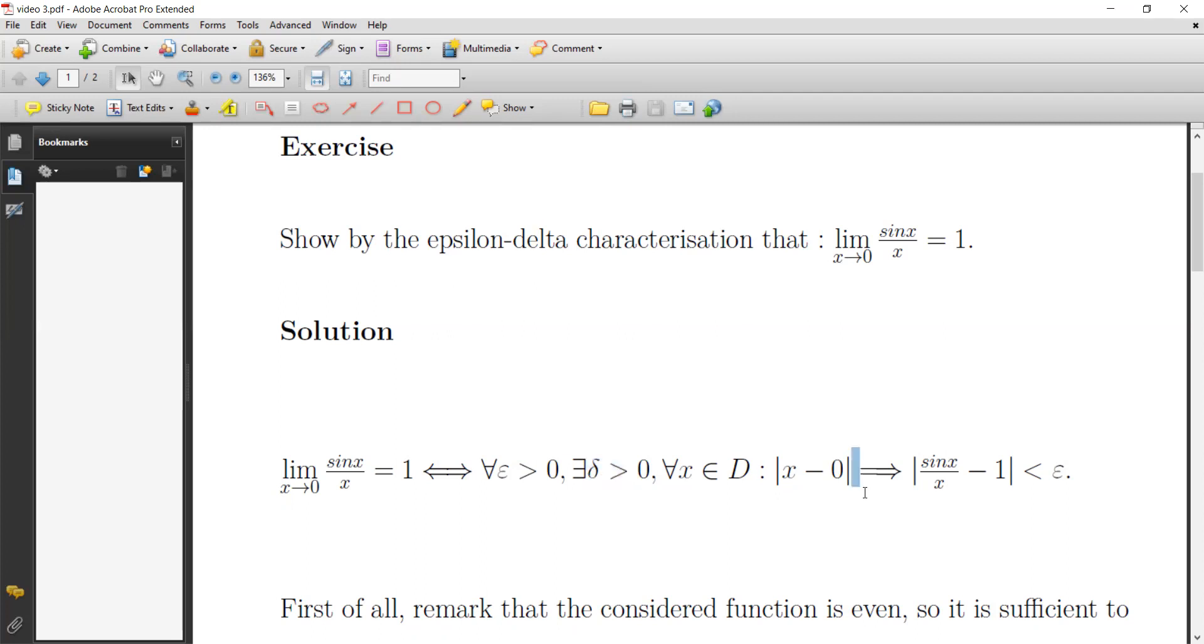Such that for all x in the domain of definition of sine x over x, such that x minus zero is less than delta, this implies that sine x over x minus one is less than epsilon.